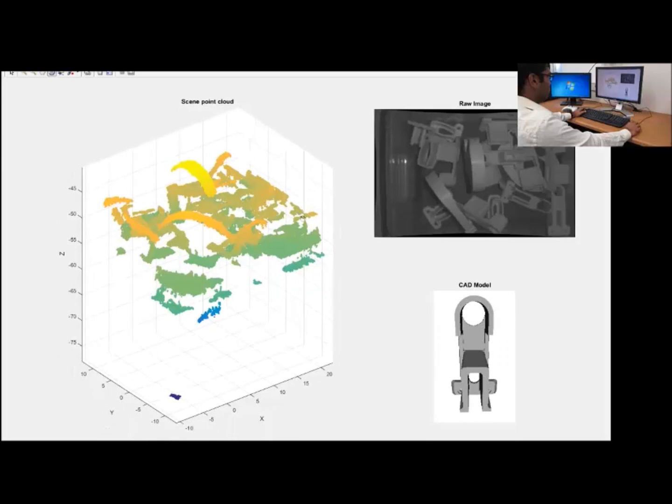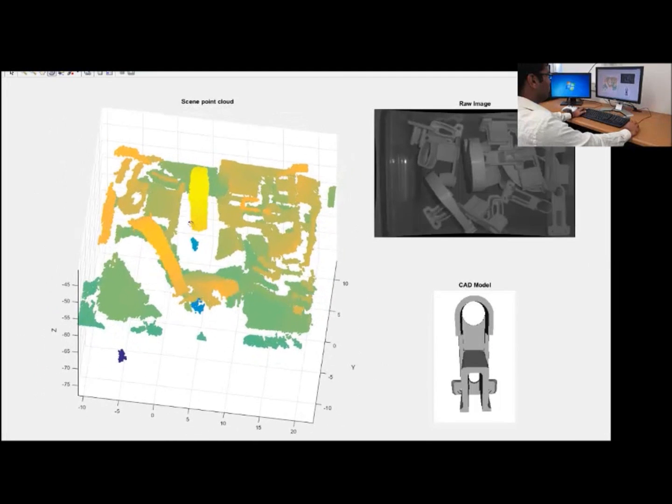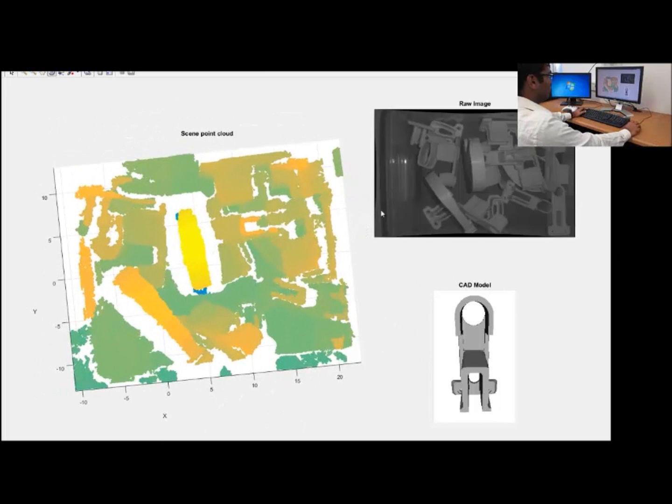It sends the 2D images and the point cloud of the bin to the human, and asks the human to identify the part in the bin.